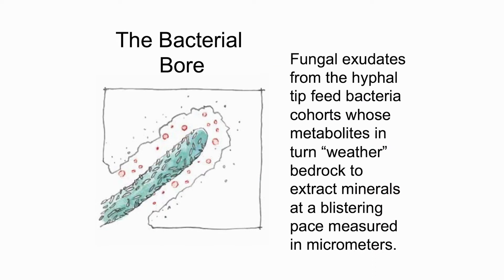Let me tell you about the bacterial bore. Going back to the idea of the explorer hyphae on ectomycorrhizal species — trees reaching 12 feet down — the fungus brings carbon sugars down and exudes it through its tip where bacteria, which traveled along the fungal hyphae, have congregated. They use that energy to produce organic acids that dissolve the bedrock, which the fungi can then take back to the plant from far away.